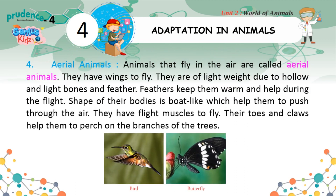Aerial Animals. Animals that fly in the air are called aerial animals. They have wings to fly and are lightweight due to hollow and light bones and feathers. Feathers keep them warm and help during flight. The shape of their bodies is boat-like, which helps them to push through the air. They have light muscles to fly, and their toes and claws help them to perch on branches of trees.